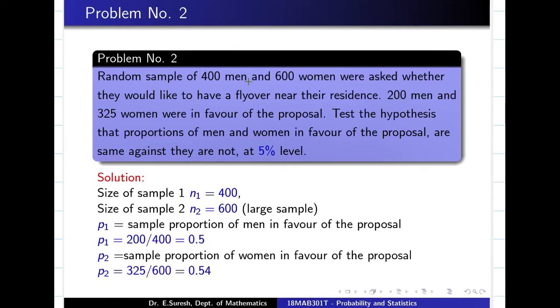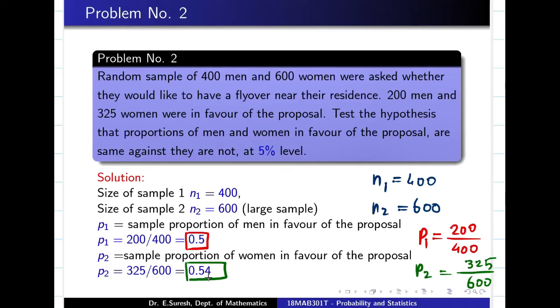Let us see what is given to us. A random sample of 400 men and 600 women. So N1 is 400, N2 is 600. Two data sets given to us. We are asked whether they would like to have a flyover near their residence. So out of 400, 200 men have responded. So 200 by 400 is going to be my P1. Next, 325 women were responded. So out of 600, 325 women have responded. So my P2 is going to be 325 by 600. So N1, N2, P1, P2, everything is there. Obviously, we have to find capital P that we can find through a formula. So let us go and fix the hypothesis.